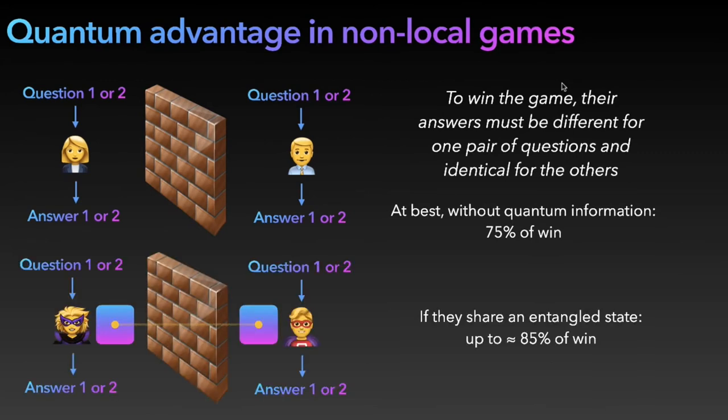But now, if you give them an entangled pair of photons or an entangled system, they can do better by performing some good measurements on their share of the state. By reading the result of these measurements, they can achieve up to 85% win rate for this game. This is an example of a quantum advantage because we have a task for which with quantum information they win more than with classical information.